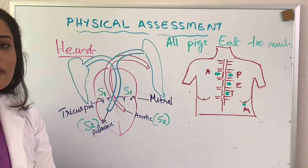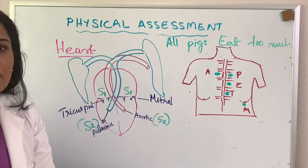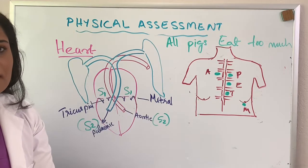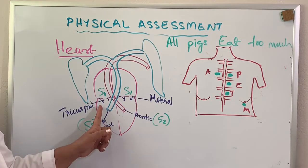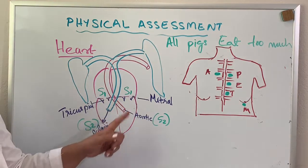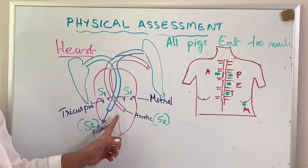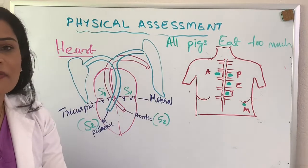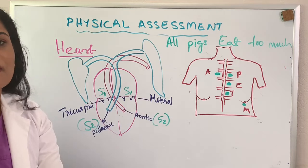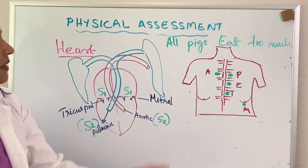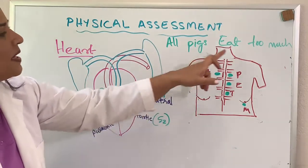When you listen to the heart sound with the bell of the stethoscope, you can always hear 'lub-dub, lub-dub.' Lub is S1, dub is S2. Lub is formed by the closure of the atrioventricular valve; S2 by the closure of the semilunar valves — aortic and pulmonic. The mnemonic used to aid memory is: 'All Physicians Eat Too Much' — Aortic, Pulmonic, Erb's point, Tricuspid, and Mitral.